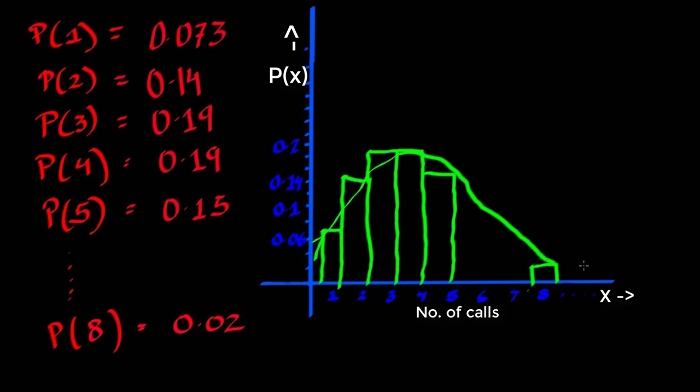So it follows a curve like this. And if you go to infinity, this 0.02 value will get smaller and smaller.